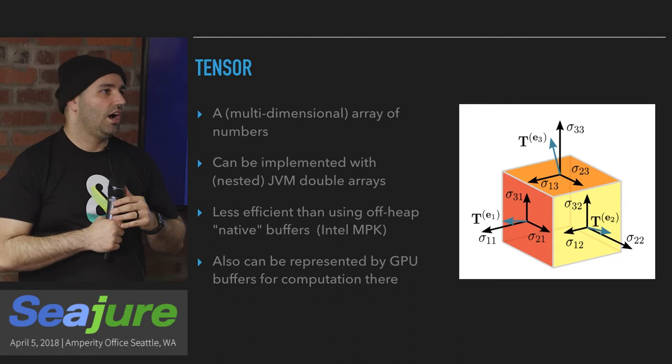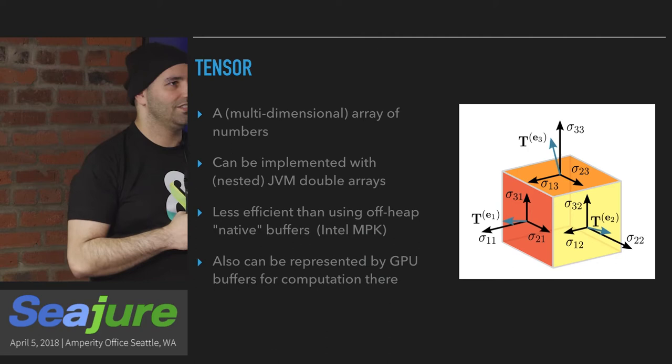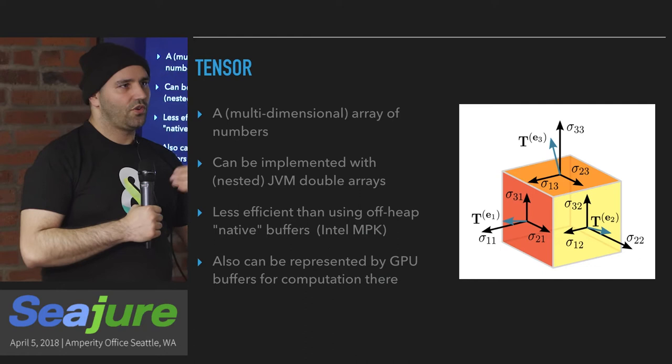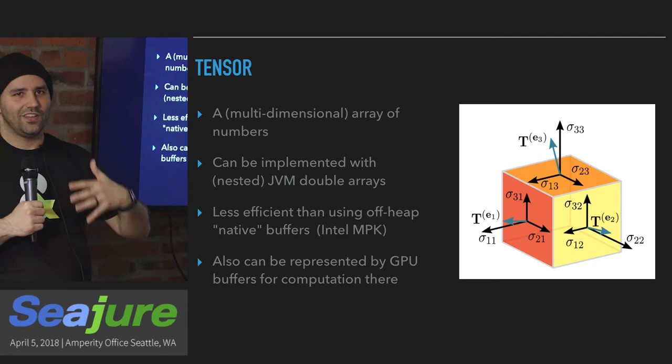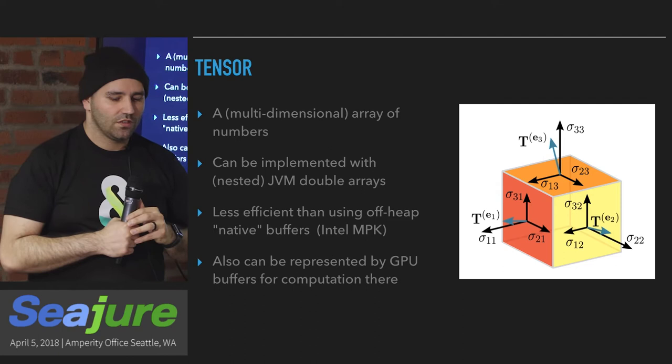I haven't actually done this yet, but you can also represent a tensor with a GPU buffer. It's actually pretty straightforward to take everything in Flare and make it run on a GPU. I personally haven't, because for the vast majority of real-world use cases you don't use GPUs. GPUs are usually for training — nobody really uses GPUs for inference. When you actually use a machine learning model in practice, it's not like Facebook or Google has a fleet of GPU machines executing stuff.